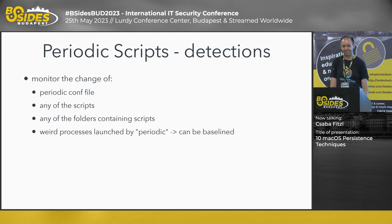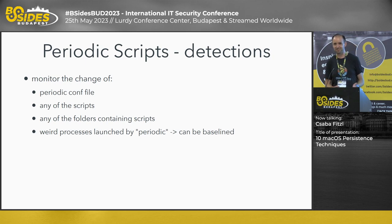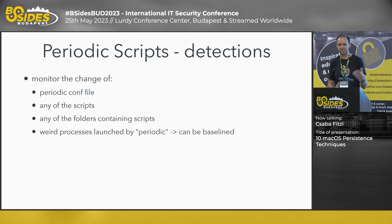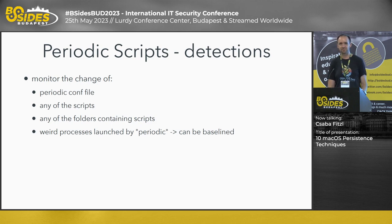How to detect this persistence? Monitor for any changes to periodic.conf files, changes to any of the scripts, changes to the folders containing these scripts, or weird processes launched by periodic. macOS comes with only a small set of these scripts, so you can easily build a baseline of what's normally executed, and anything else is likely malicious. I don't think third-party applications typically put their stuff in there.